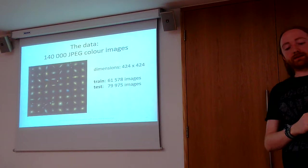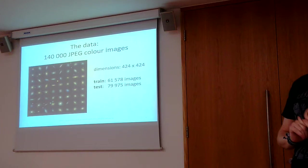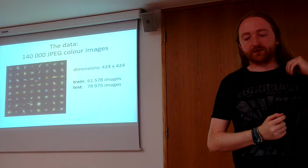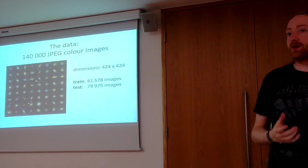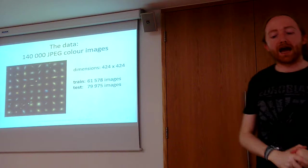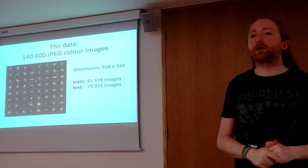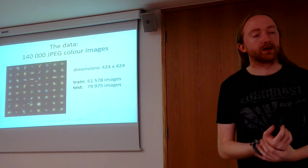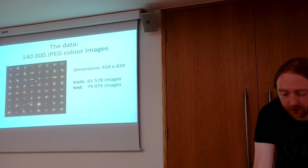So in practice what this problem looked like for competition participants was as follows. We got 140,000 JPEG color images of galaxies. Each one was 424 by 424 pixels. So if you're familiar with ConvNets in general, you know that these are actually quite big images to process with ConvNets. About 60,000 of these images had the probabilities, the answer probabilities provided, so these were our labeled data that we could use to train the models. And then the remaining images were the ones that we were supposed to generate predictions for, and those were the images on which our performance was judged.